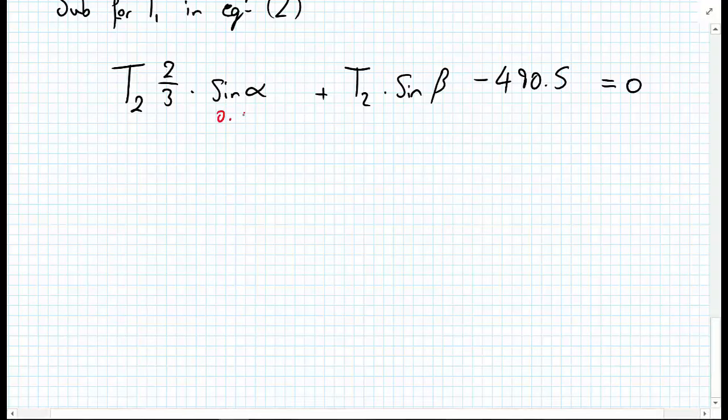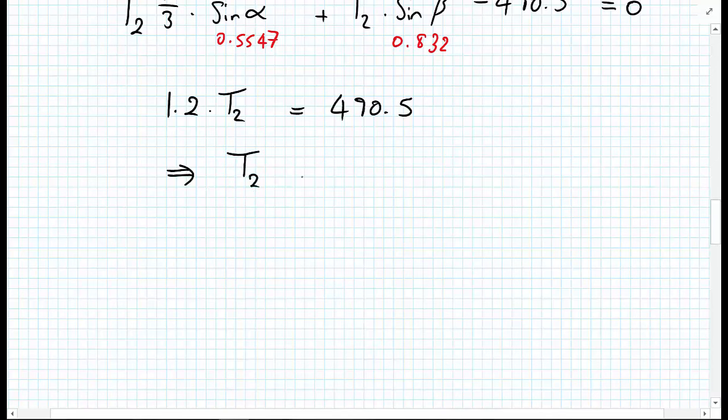So let's just put those in quickly. We know that the sine of alpha is equal to 0.5547 and that the sine of beta equals 0.832. And we can then work out therefore that 1.2 multiplied by T2 is equal to 490.5, and we're going to divide out to get us T2 equals 408.1 newtons.